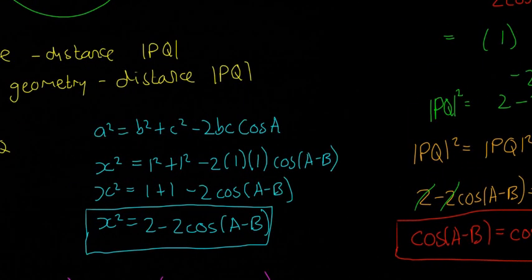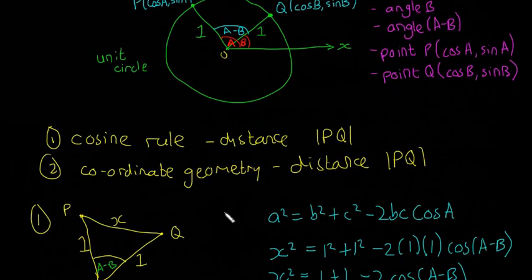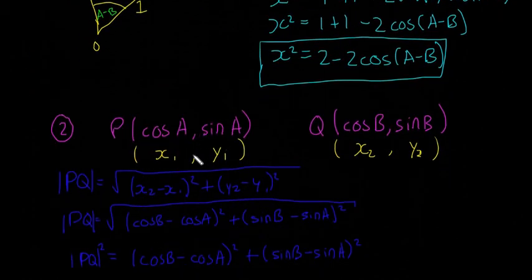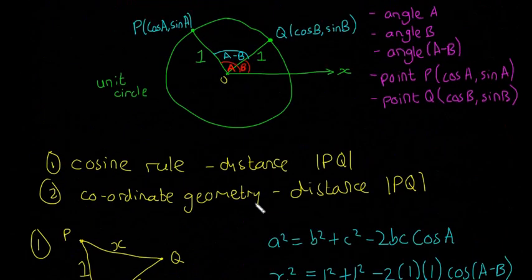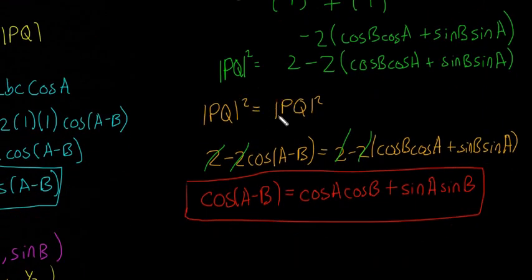That was quite long, but it isn't so difficult if you look at each individual step. First, draw the diagram with all the required elements. Then find the distance PQ using the cosine rule to get X² = 2 − 2cos(A − B). Next, find PQ using coordinate geometry. Let the two expressions equal each other, cancel the 2s, and you're left with cos(A − B) = cosA·cosB + sinA·sinB. You need to have that learned off by heart for the Leaving Cert. We'll see you next time for examples on compound angle identities.